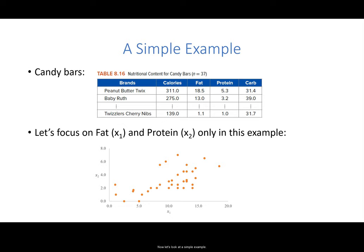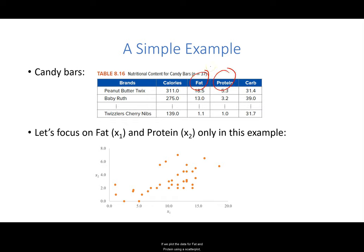Now let's look at a simple example. We have a dataset with 37 candy bars and their nutritional facts such as calories, fat, protein, and carb. To simplify the problem, let's only focus on two of the nutritional facts, fat and protein, for now. If we plot the data for fat and protein using a scatter plot, using fat as X1 and protein as X2, we get the scatter plot at the bottom of this slide.